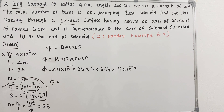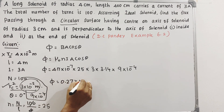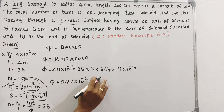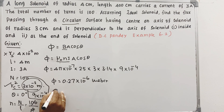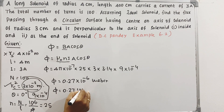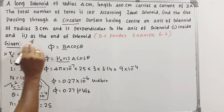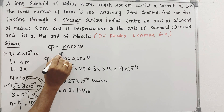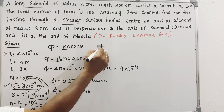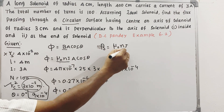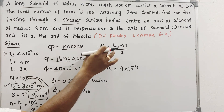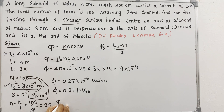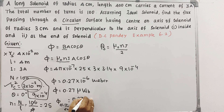The magnetic flux at the center of the solenoid is 0.27 × 10⁻⁶ Weber, or 0.27 micro-Weber. At the end of the solenoid, the magnetic field B is μ₀·n·I divided by 2, so the flux at the end is 0.27/2 = 0.135 micro-Weber.